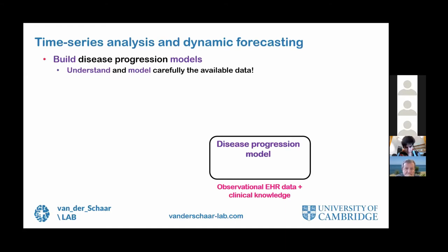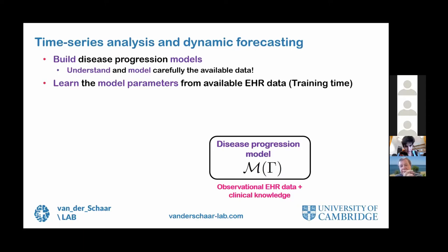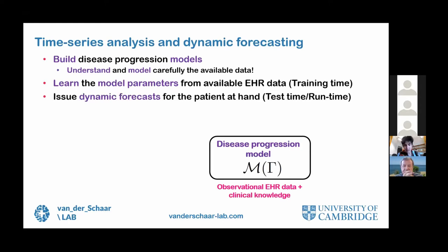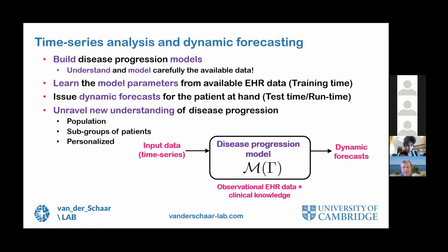Often what we have at our disposal is electronic health record data as well as clinical knowledge, and on the basis of this we would like to build disease progression models that help us understand and carefully model the available data. We build such machine learning models, learning parameters from electronic health record data, and then use these models at test time to make predictions for the patient in front of the clinician. The focus is not only forecasting, but also understanding new views about disease progression — both at the population level, at the subgroup level, and at the individual patient level.